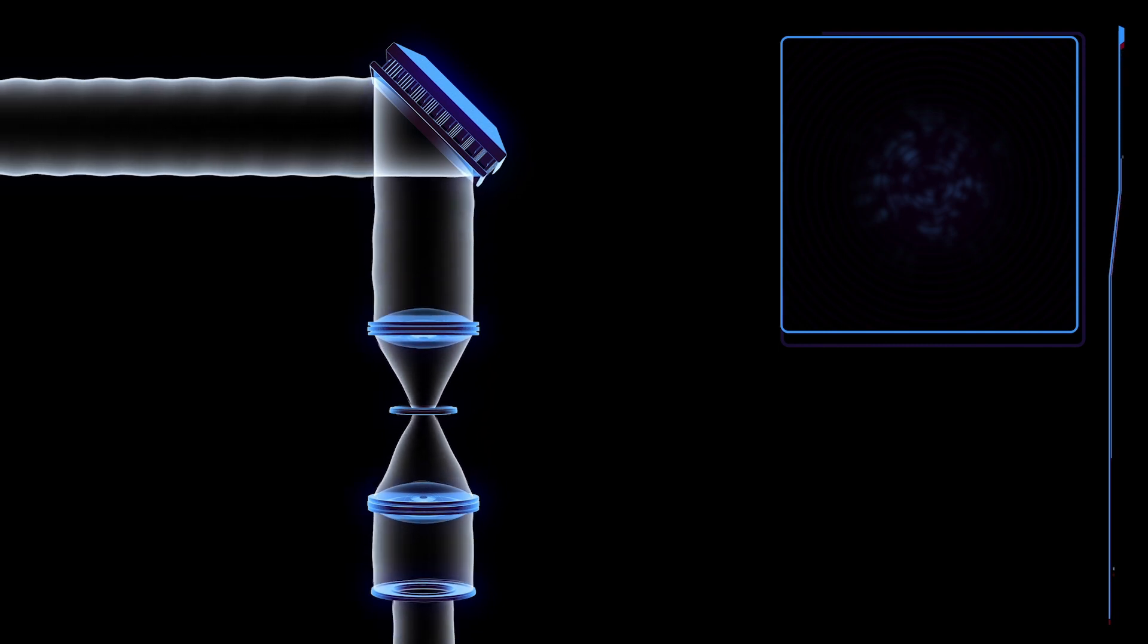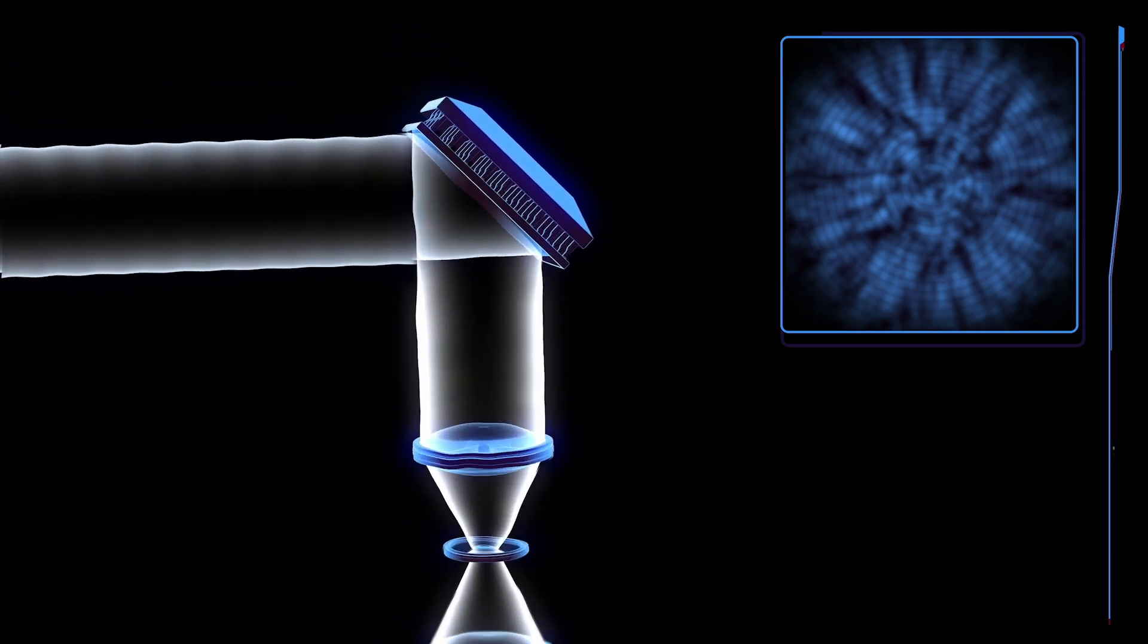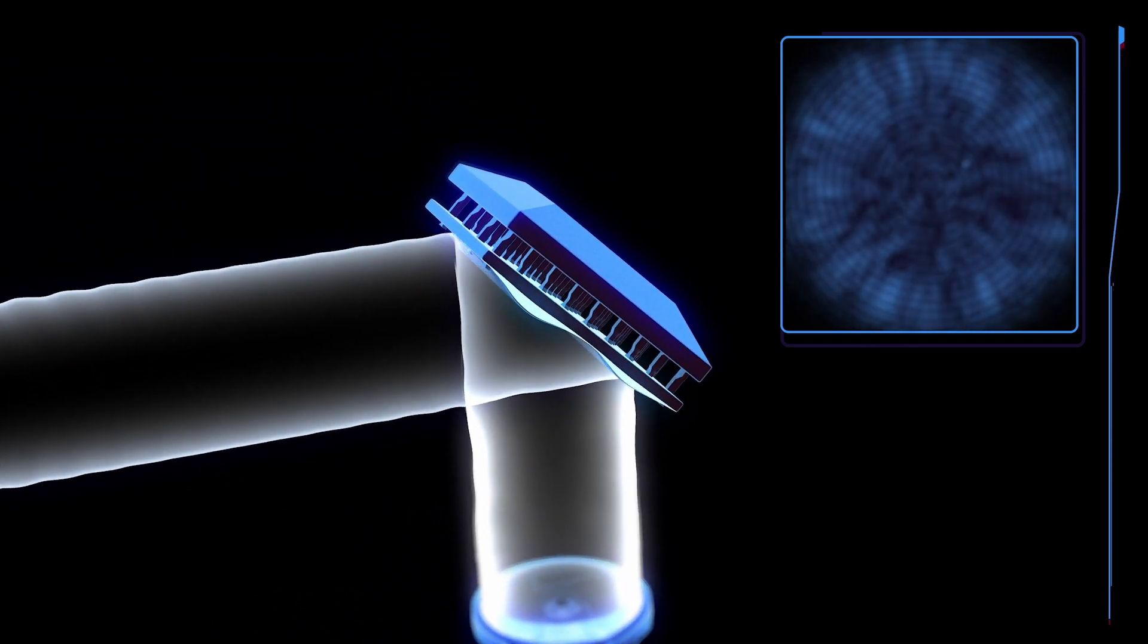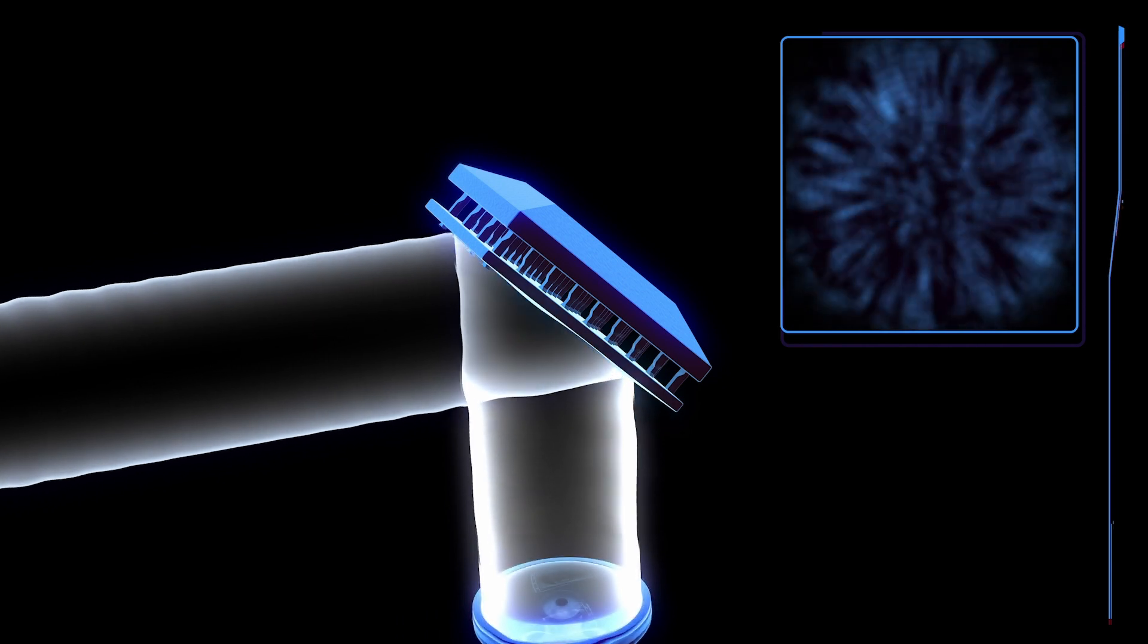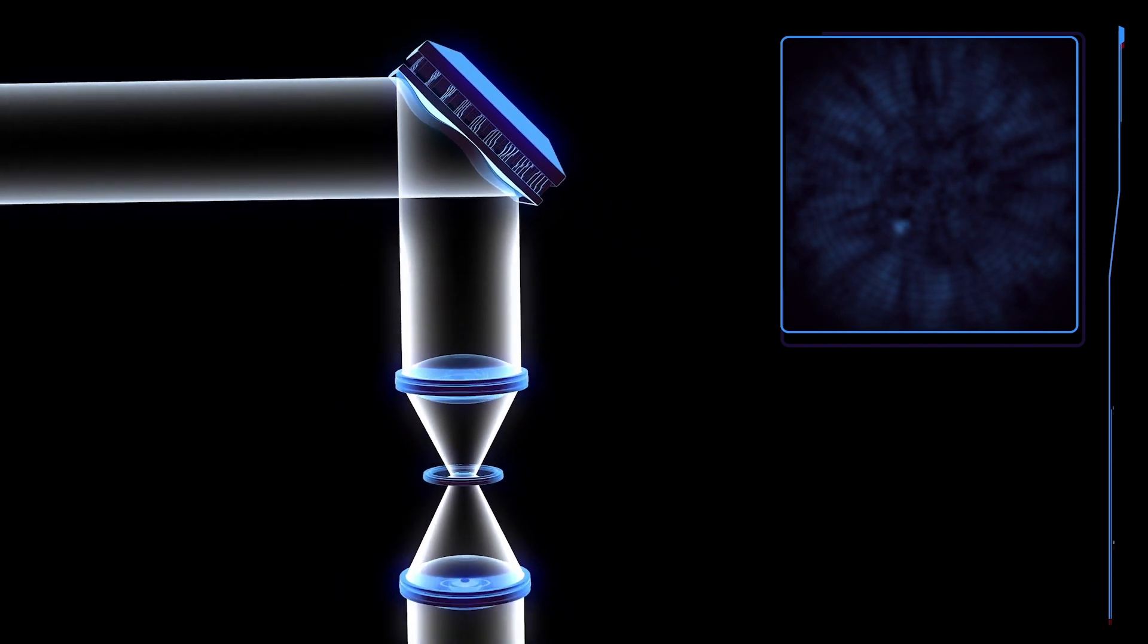The Roman Space Telescope will demonstrate direct imaging technology that has never been flown aboard a space-based observatory before. Using this technology, Roman will help pave the way for future missions to image Earth-like planets around nearby stars and measure their spectra to search for signs of life.